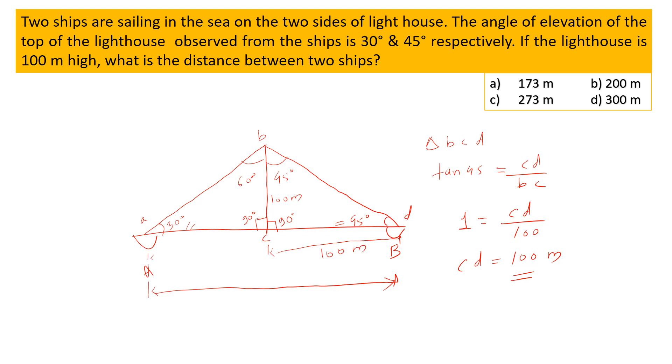Now we have to calculate this distance. So similarly in triangle ABC, we can say tan 60° is equal to AC upon BC. So we know that the value of tan 60° is √3. So √3 is equal to AC upon BC, that is height of lighthouse, that is 100 meters. So we get AC is equal to 100 into √3.